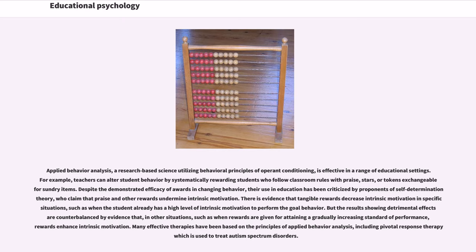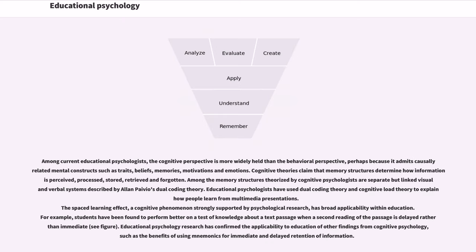Many effective therapies have been based on applied behavior analysis, including pivotal response therapy used to treat autism spectrum disorders. Among current educational psychologists, the cognitive perspective is more widely held than the behavioral perspective, as it admits causally related mental constructs such as traits, beliefs, memories, motivations, and emotions. Cognitive theories claim that memory structures determine how information is perceived, processed, stored, retrieved, and forgotten. Among the memory structures theorized by cognitive psychologists are separate but linked visual and verbal systems described by Alan Paivio's dual coding theory.